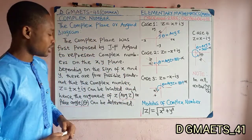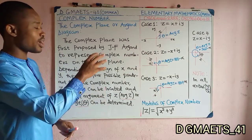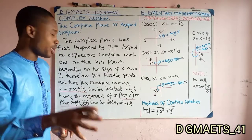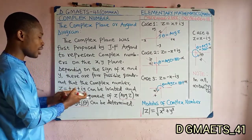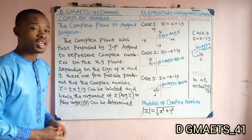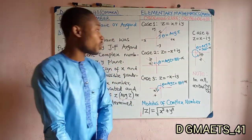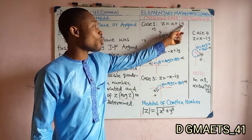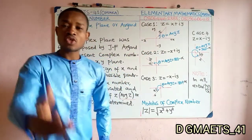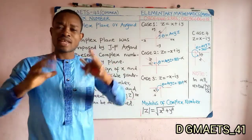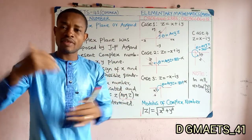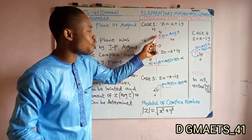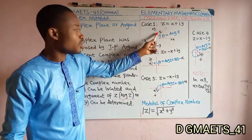There are four possible cases or diagrams that can be obtained depending on the sign of X and Y in the complex number. In Case 1, Z equals X plus iY, where X and Y are both positive. If you plot the point, it will be located between positive Y and positive X — the first quadrant.